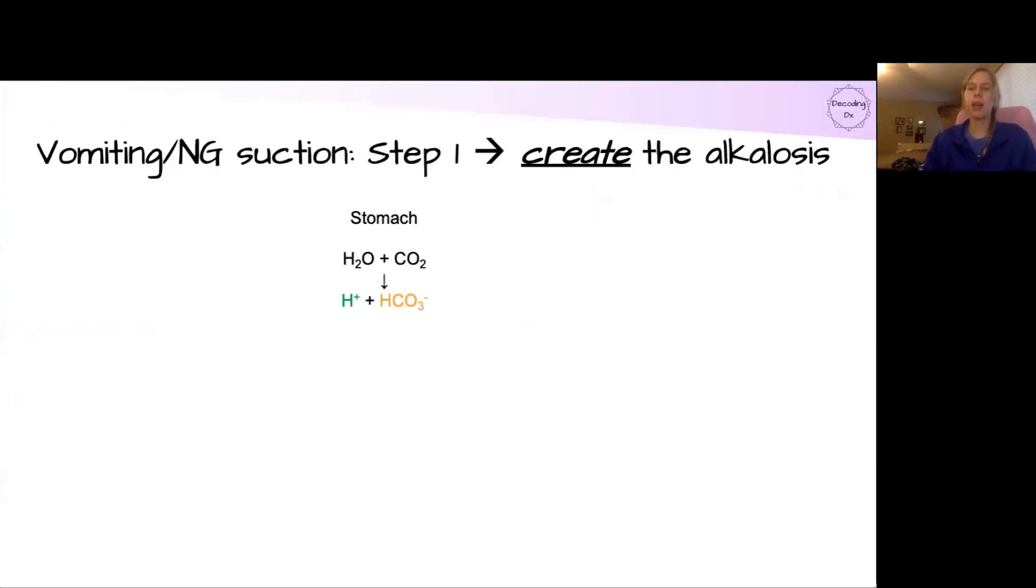So, stepping back, bird's eye view, in summary, how does vomiting and NG suction create alkalosis? Starting off in the stomach, we have the creation of the hydrogen ion or acid and the bicarbonate.